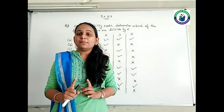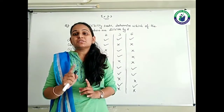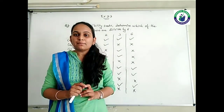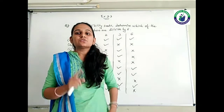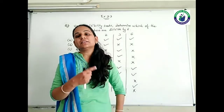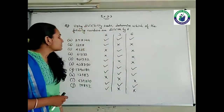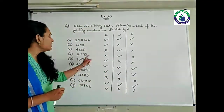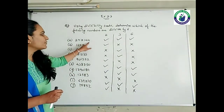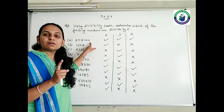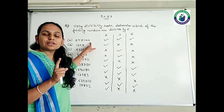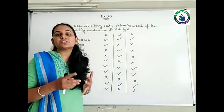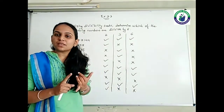If it is not divisible by even one of them, then 6 will also not happen. If both are agreed, then and then 6 will be there. First of all, 2, 9, 7, 1, 4, 4. To check whether it is divisible by 2 or not, the last digit should be even. Since last digit is 4, it is even, so it is divisible by 2.